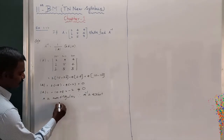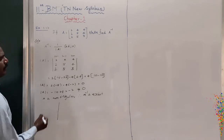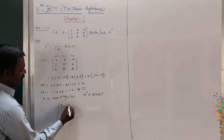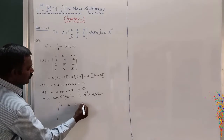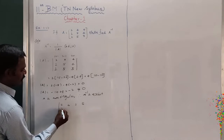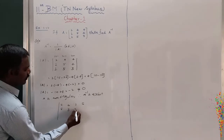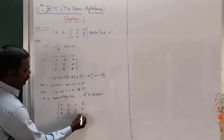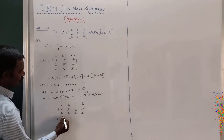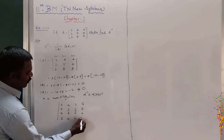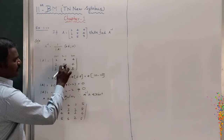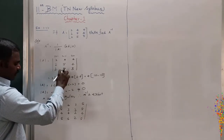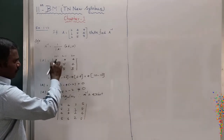First we have to find out the cofactors. The cofactor matrix A_ij is computed by taking each element and finding the corresponding minor from the remaining rows and columns of the matrix [2 4 4; 2 5 4; 2 5 3].